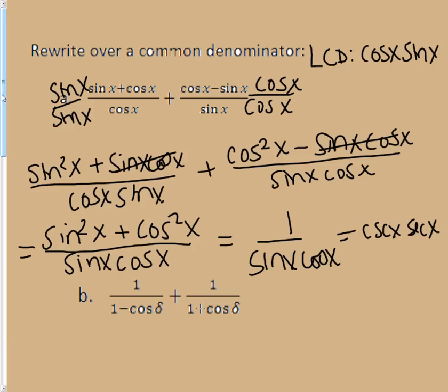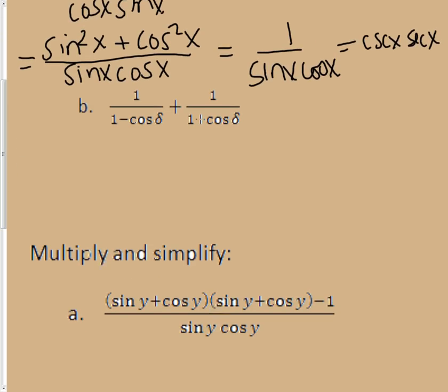Why don't you guys give B a try? So, we came up with B, I hope, is 2 times the cosecant squared of gamma.